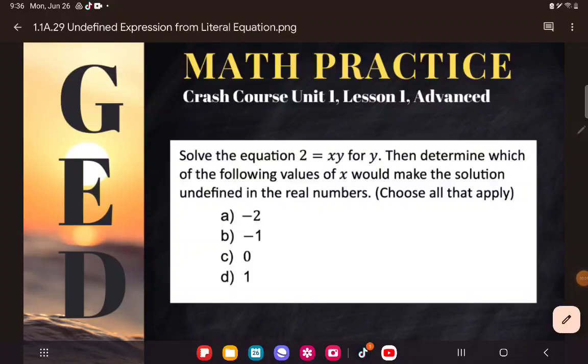Hey GED students, first step here is not to freak out. This is easier than it looks. Let's go ahead and read it. Solve the equation 2 equals xy for y. Then determine which of the following values of x would make the solution undefined in the real numbers. Choose all that apply.